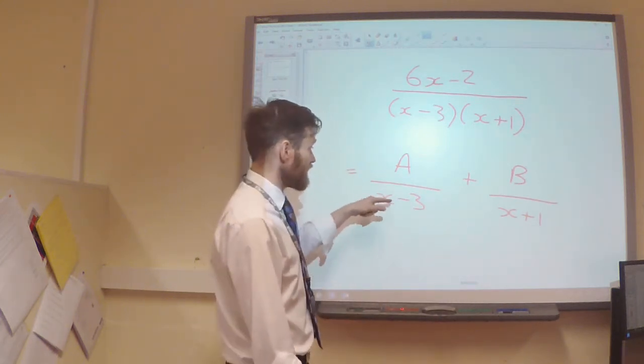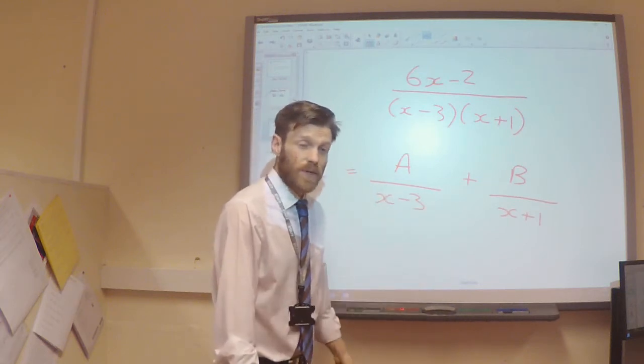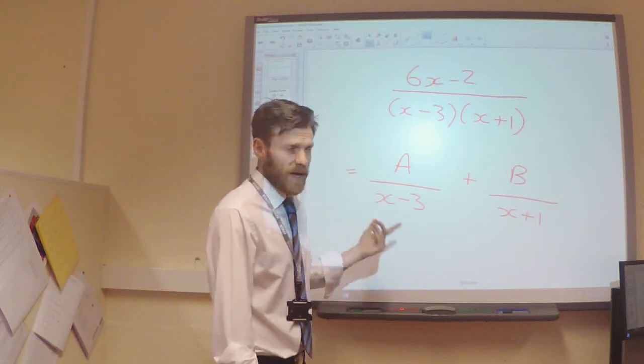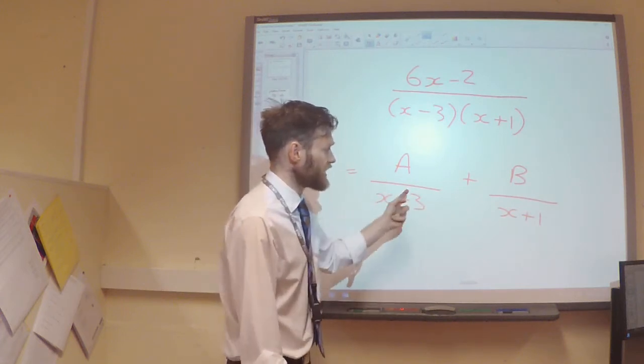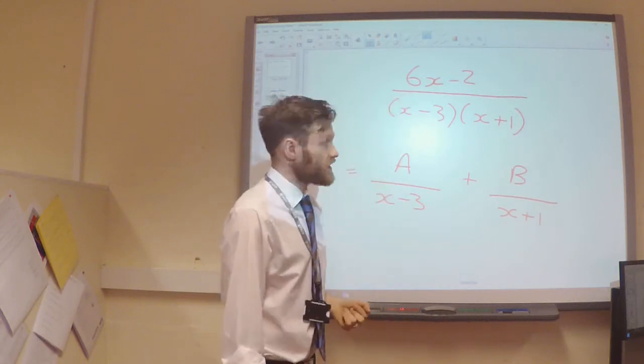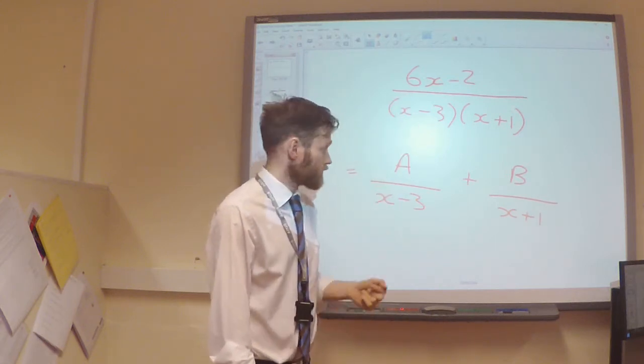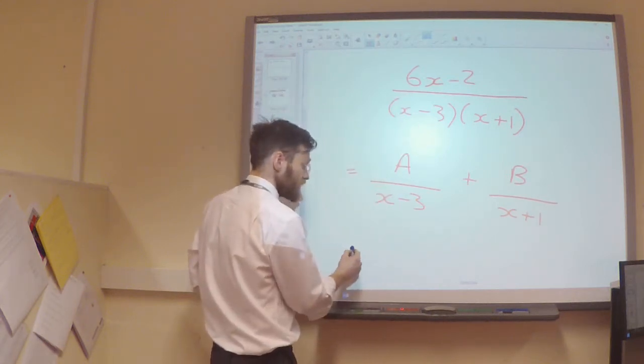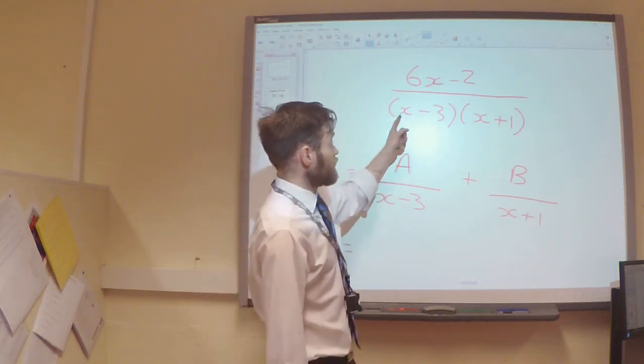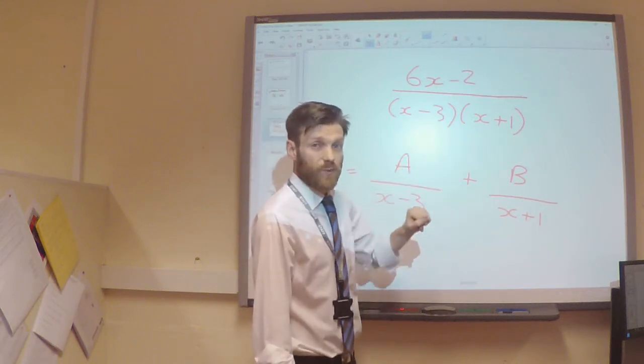What I need to do now is to figure out what A is and what B is. So, I'm now going to do the reverse process. If I multiply this out and bring these fractions together, I should get 6x minus 2. So, if I were to get these as a common denominator, my common denominator is going to be x minus 3 times x plus 1.